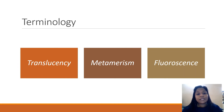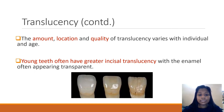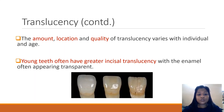Apart from shade selection, we must know different optical phenomena related to natural teeth: translucency, metamerism, and fluorescence. Translucency is the degree to which light is transmitted rather than being absorbed or reflected. The incisal edges of younger teeth are especially very translucent. With age, daily functions like eating and brushing cause the enamel to become thinner, allowing dentine to appear. This is seen as lower value and higher chroma. Younger teeth have greater incisal translucency, which must be noted when restoring younger patients.